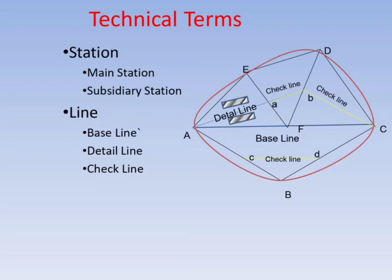Main stations are stations at the beginning or end of lines forming the main skeleton. Subsidiary or tie stations are selected on main lines to run auxiliary or secondary lines for locating interior details. The baseline is the most important and longest line — it is usually plotted first and then a framework of triangles is built on it.